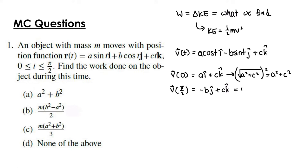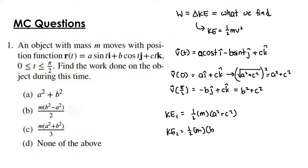So the kinetic energy at the first point is ½m(a² + c²), and the kinetic energy at the second point is ½m(b² + c²). Taking the difference gives us the change in kinetic energy: ½m(b² − a²), because the c² terms cancel out. That gives us choice B.